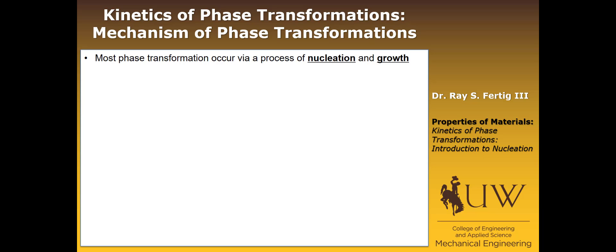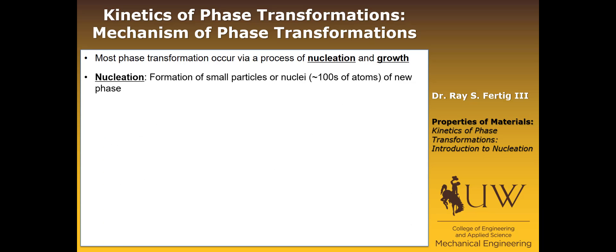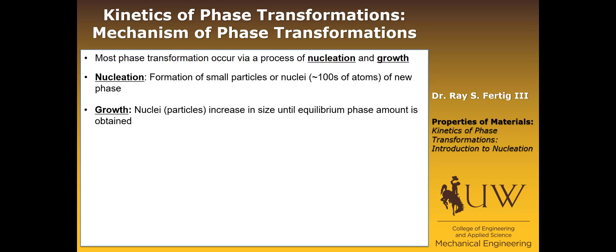Most phase transformations that we're going to encounter occur via some process of nucleation and growth. Nucleation is exactly like it sounds — it's the formation of some small particles, or nuclei, usually on the order of hundreds of atoms of whatever new phase. In the case of simple solidification, the new phase would be the solid phase. The growth phase is just: once those nuclei form, they're going to increase in size until whatever the equilibrium phase amount required is obtained.